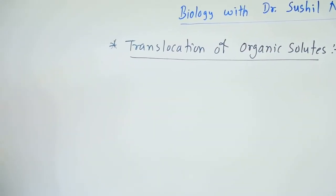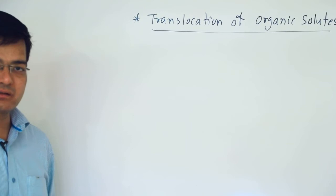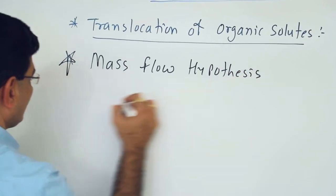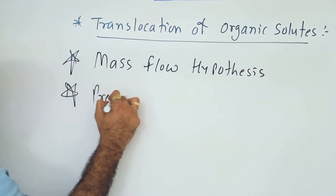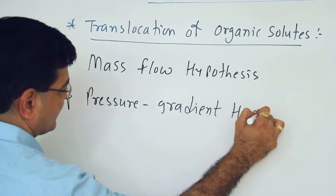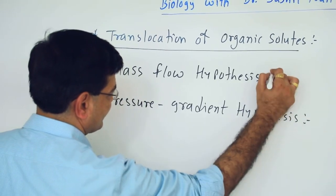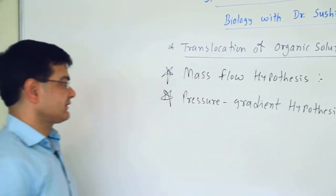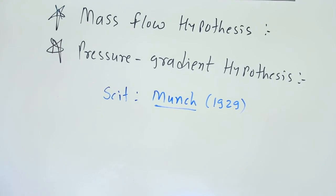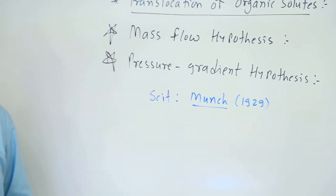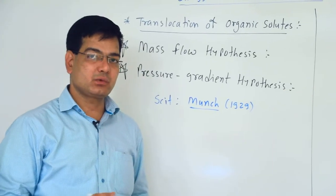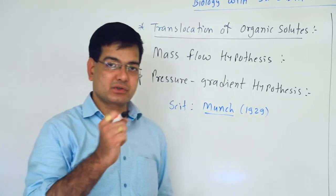To understand the translocation of organic solutes, we have the mass flow hypothesis, which is also called the pressure gradient hypothesis. This theory was given by scientist Munch in 1929. He explained that this pressure flow or pressure gradient hypothesis tells us how the transport of food material occurs from source to the sink.